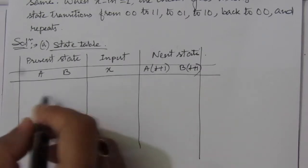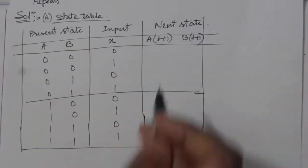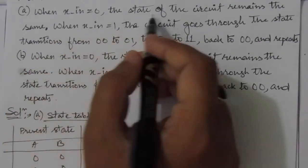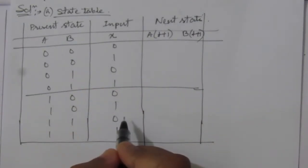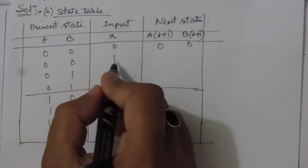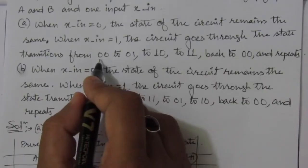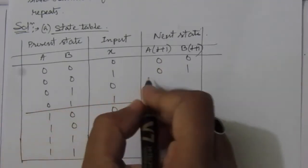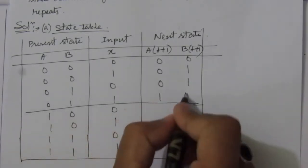Filling the state table for Part A: when input is 0, the next state equals the present state. So for present state 00 with input 0, next state is 00; with input 1, transition 00→01, so next state is 01. For present state 01 with input 0, next state is 01; with input 1, transition 01→10, so next state is 10. For present state 10 with input 0, next state is 10; with input 1, transition 10→11, next state is 11.